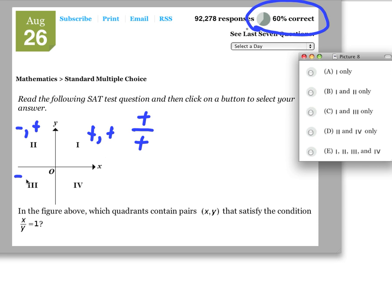In quadrant 3, we're going to have negative x and a negative y. So that one's going to work too.